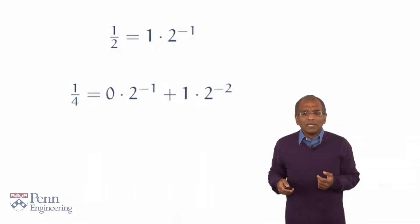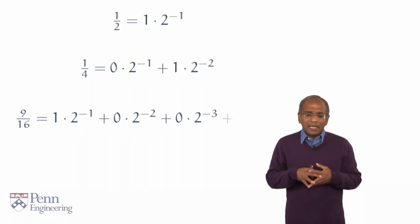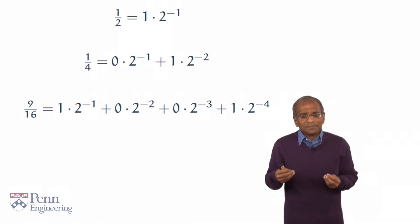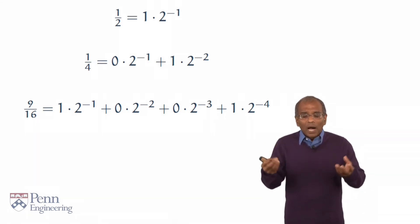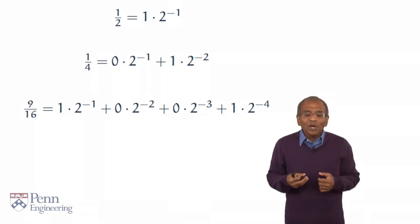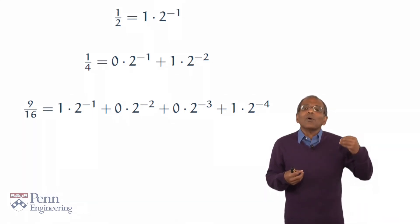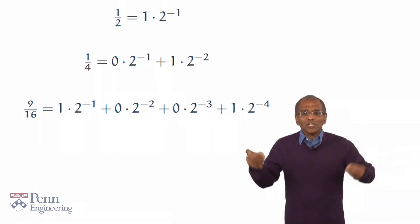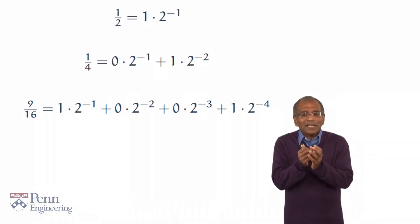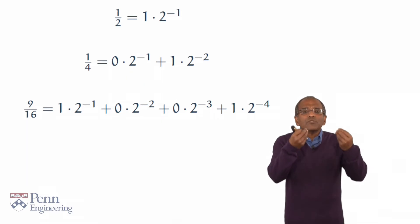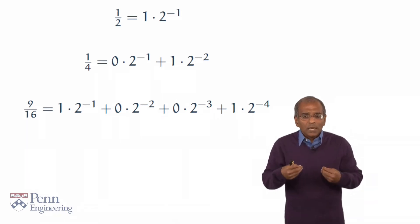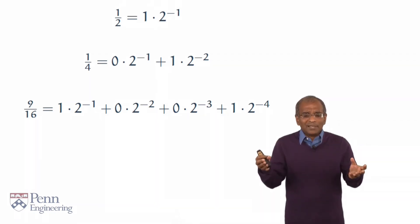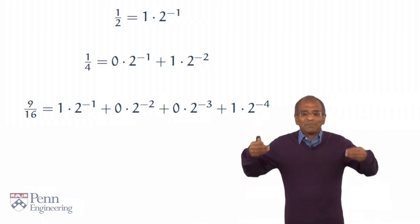Let's try another fraction — nine sixteenths. Nine sixteenths can be written as one half plus one sixteenth. Or another way: one half, no contribution from a quarter, no contribution from an eighth, and one sixteenth. We see here the beginnings of an incipient expansion of these numbers in terms of reciprocal powers of two multiplied by zeros and ones. All the expansions shown so far are finite. Could we conceive of an infinite expansion in powers of two?